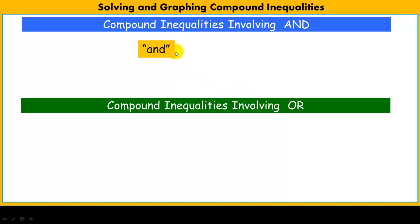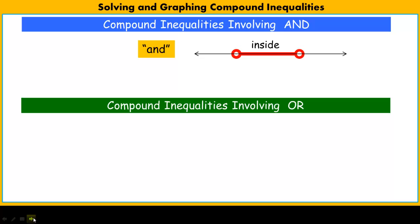Inequalities involving the AND statement have a graph of the solution set that looks something like this. This is our number line — these two points are our boundaries, left open — and this red line in the middle is our solution set. Everything between the boundaries is the solution to the inequality. It is an infinite solution set; there are an infinite amount of numbers between any two boundary points.